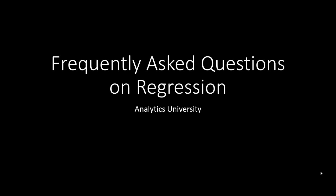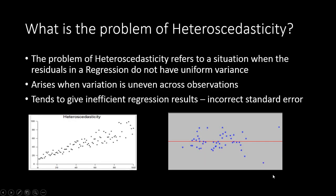We will discuss some more frequently asked questions on regression in this video. The first question is: what is the problem of heteroscedasticity? The problem of heteroscedasticity refers to a situation when the residuals in a regression do not have uniform variance.